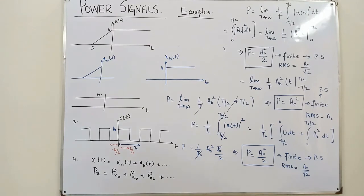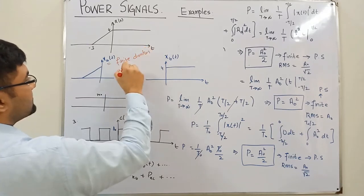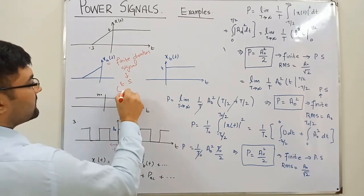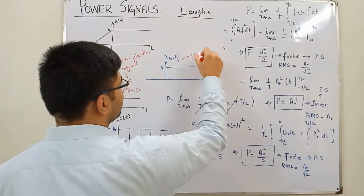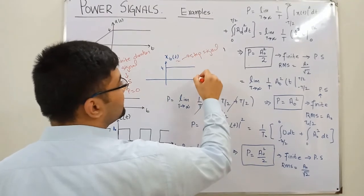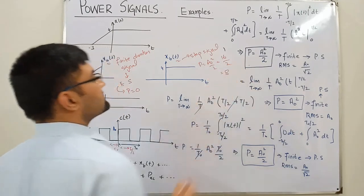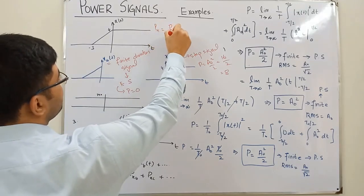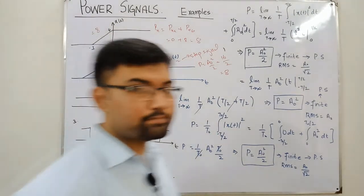x_a(t) is a finite duration signal, which represents an energy signal, and for an energy signal the power is zero. x_b(t) is a step signal with a₀ = 4, so its power is a₀²/2 = 16/2 = 8. Therefore, the total power of x(t) is 0 + 8 = 8.